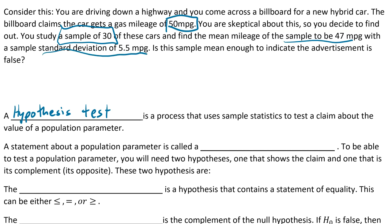A statement about a population parameter is called a statistical hypothesis. To be able to test the population parameter, you will need two hypotheses: one that shows the claim and one that is its complement, or its opposite.